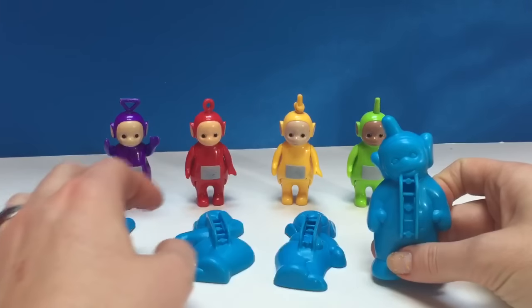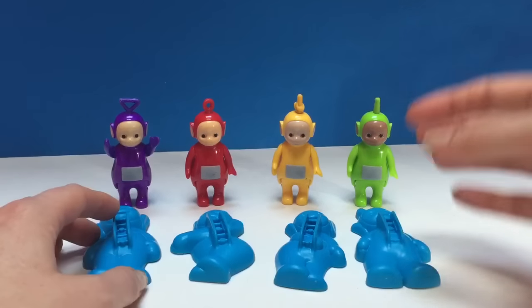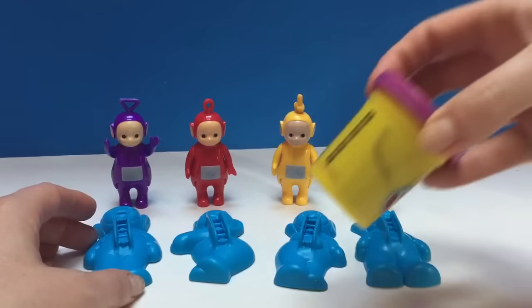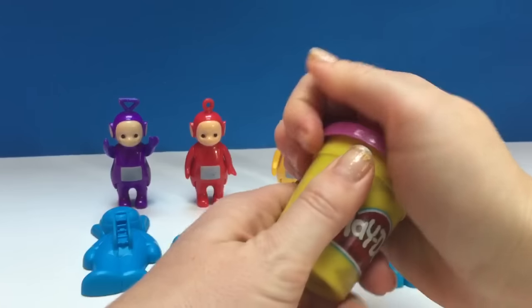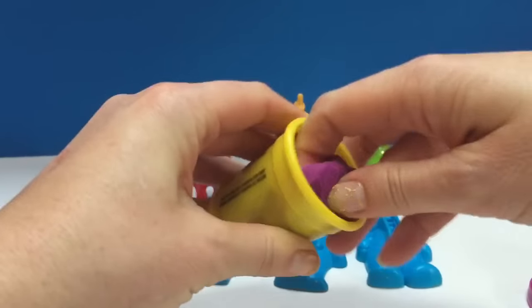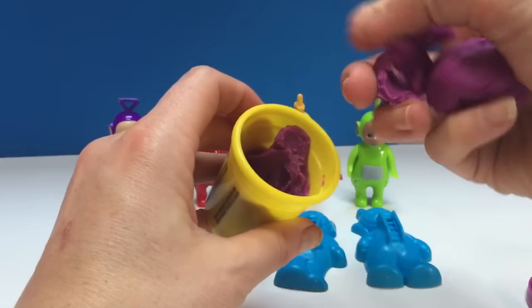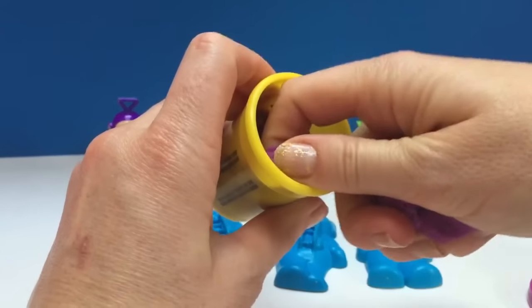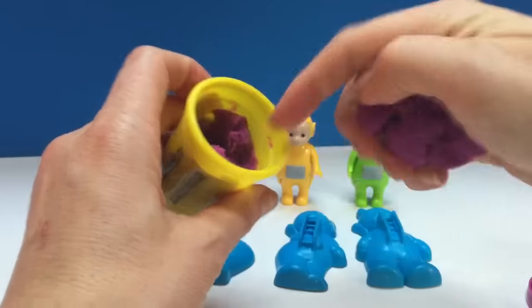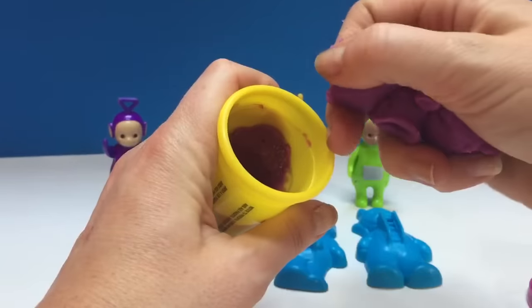So let's make Play-Doh Teletubbies. So I have some purple Play-Doh, and we're going to do Tinky Winky first. Now I'm thinking we might need all this Play-Doh to do the molds, but let's just have a look. You just never know. And this is really sticky stuff, so we've got to really dig for it.